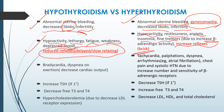In cardiovascular findings, hypothyroidism presents with bradycardia, dyspnea on exertion, and decreased cardiac output. Hyperthyroidism presents with tachycardia, palpitations, dyspnea, arrhythmias (mainly atrial fibrillation), chest pain, and systolic hypertension — all due to increased number and sensitivity of beta-adrenergic receptors.